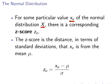Capital X is a variable name. This is some particular value, for example 1000, that there is a corresponding Z-score Z0.